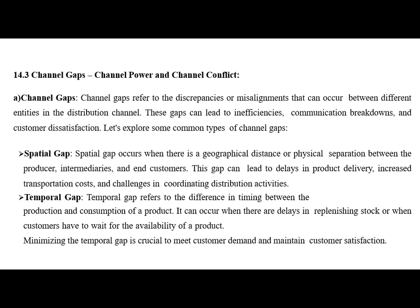Next, we will discuss channel gaps — what are channel gaps, what is channel power and how conflict arises. Channel gaps refer to discrepancies or misalignments that can occur between different entities in the distribution channel. These gaps can lead to inefficiencies, communication breakdowns and customer dissatisfaction. Spatial gaps occur when there is a geographical distance or physical separation between the producer, intermediary and end customer, leading to delays in product delivery, increased transportation costs and coordination challenges. Temporal gaps refer to the difference in timing between the production and consumption of a product, occurring when there are delays in replenishing stock or when customers have to wait for product availability. Minimizing the temporal gap is crucial to meet customer demand and maintain satisfaction.